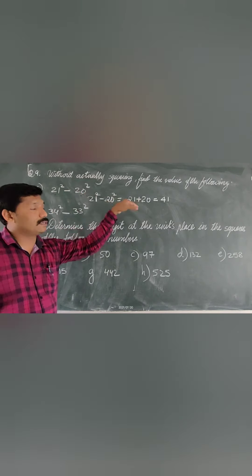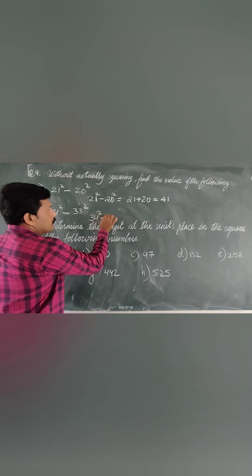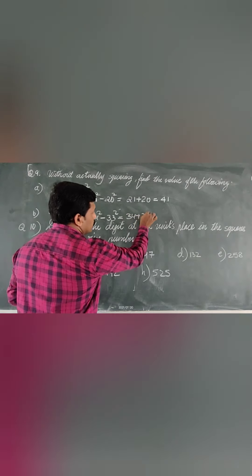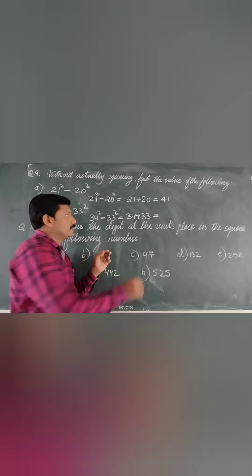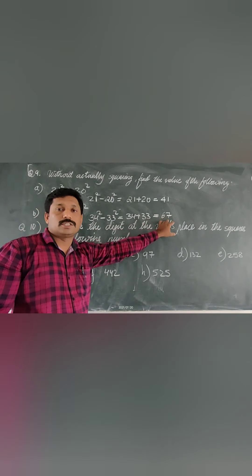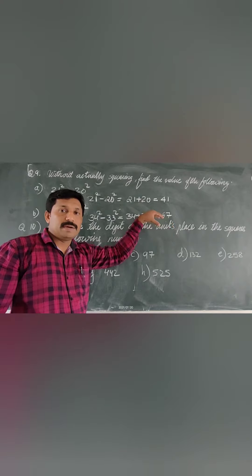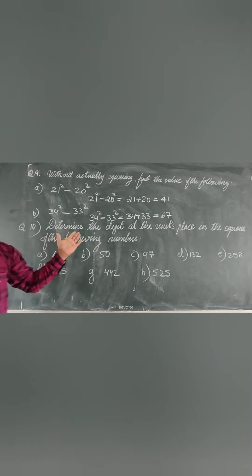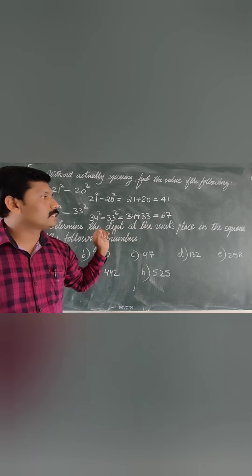Another example: 34 squared minus 33 squared. These are also consecutive numbers. So the difference of their squares equals their sum. Therefore 34 squared minus 33 squared equals 34 plus 33, which equals 67. If you take the square of 34 and subtract the square of 33, you will also get 67. The remaining questions you solve on your own.